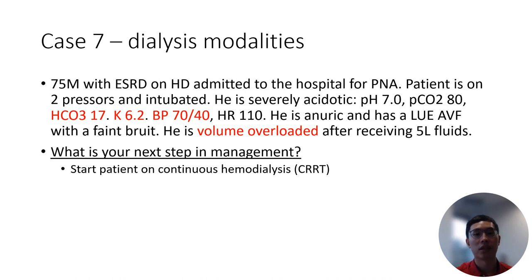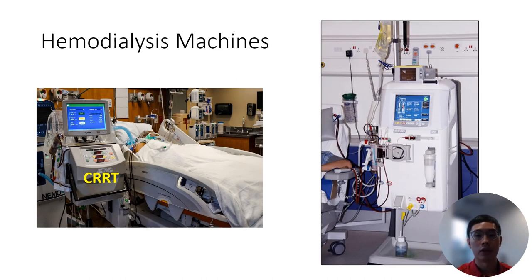Now let's talk about the different dialysis modalities that we can use for critically ill patients. In addition to our normal intermittent hemodialysis, we also have continuous renal replacement therapies or CRRT, which is a form of continuous hemodialysis. This is useful in patients who are critically ill on multiple pressors, since our usual intermittent hemodialysis can sometimes cause hypotension and hemodynamic instability in patients who are already critically ill. While the machines may look different, the theory behind all dialysis remains the same. To the left, we have a NxStage CRRT machine, which can also be used for home hemodialysis. To the right, we have a more complicated Phoenix intermittent hemodialysis machine. Interestingly, the outcomes for both intermittent and CRRT among critically ill patients are roughly the same.